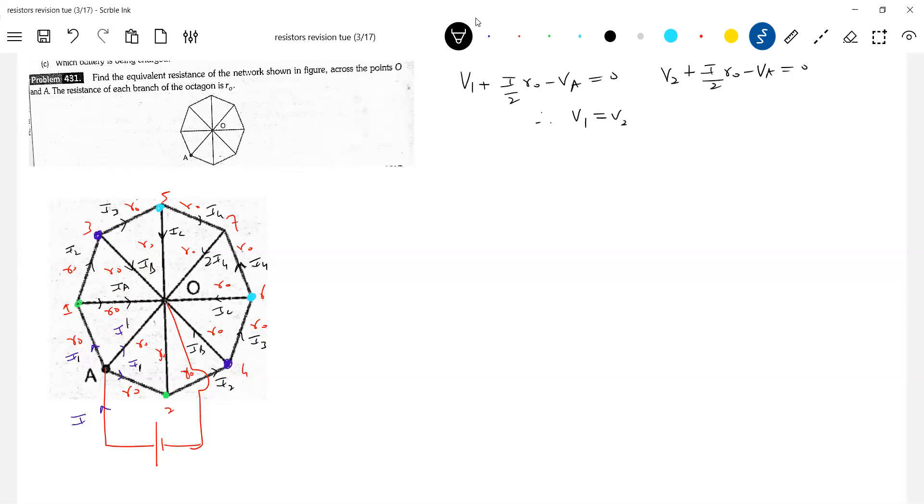So with this, what we can conclude? Potential at 1 and 2 will be same. Similarly, potentials 3 and 4 are at same potential. 5 and 6 also at same potential. Now what we should do? One which are at same potential, make them as common point.